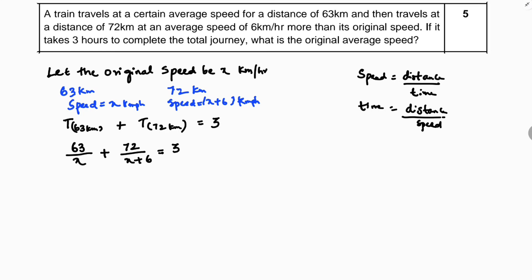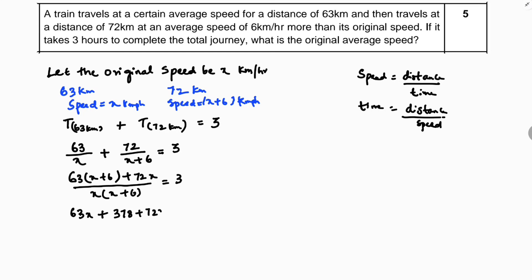Taking the LCM of x and (x+6), which is x(x+6), we get: 63(x+6) + 72x all over x(x+6) equals 3. Expanding: 63x + 378 + 72x = 3, giving us (135x + 378) / (x² + 6x) = 3.